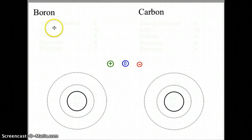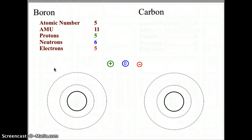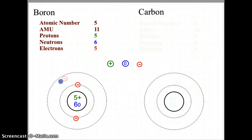Let's look at boron. Boron has atomic number five, AMU of 11, five protons, six neutrons, and five electrons. Go ahead and pause the video and build this Bohr model atom yourself, then turn the video back on to check your answer. For boron, we put five-plus for the protons and six-zero for the neutrons, then place two electrons in the first orbital level and three electrons in the second orbital level, giving us five total.